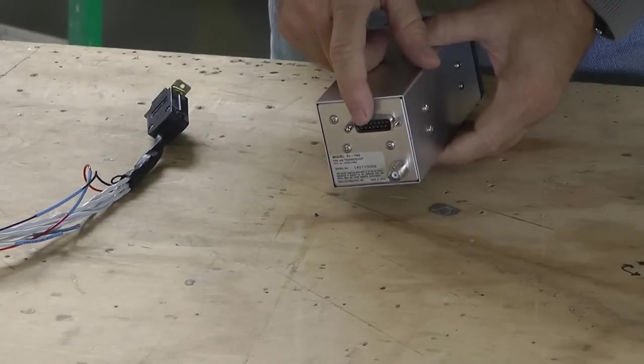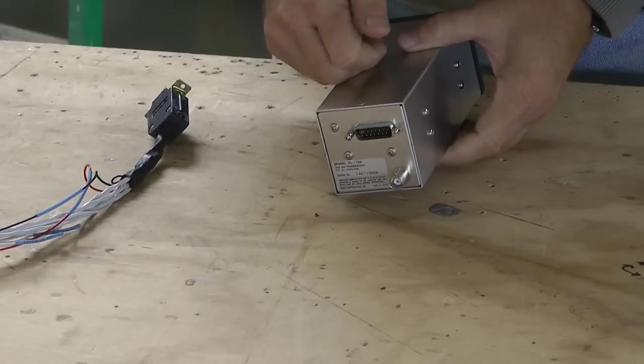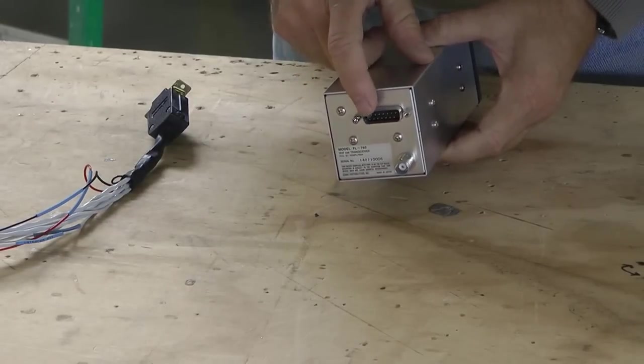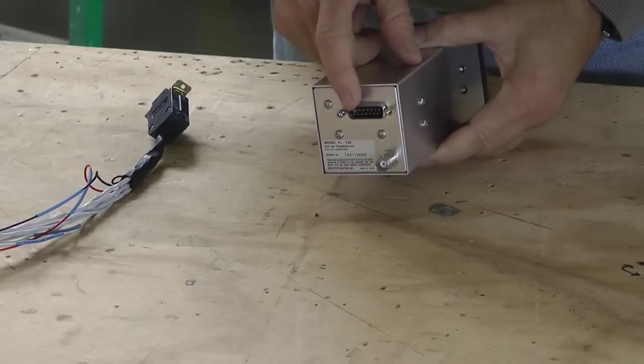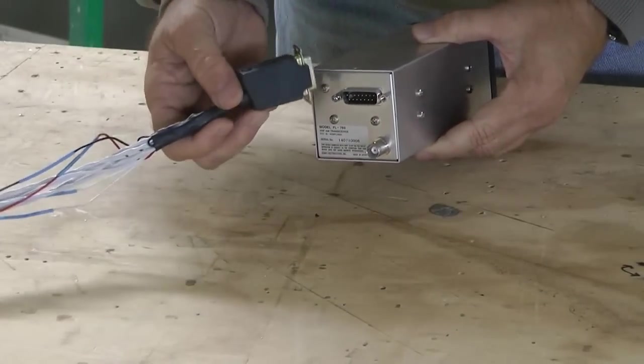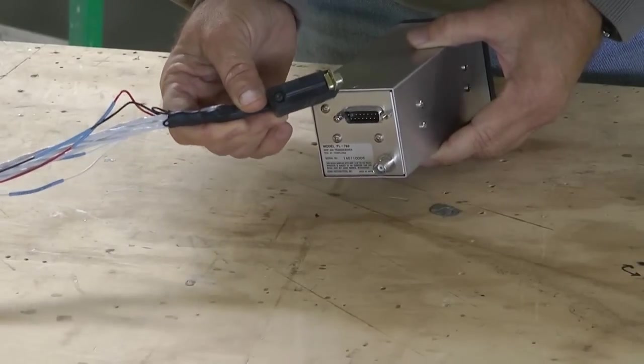And then we need a push-to-talk line so that when we hit the stick button we transmit. And we might also want some audio to play or music, so we need another jack for that. So how do we wire up a plug with all of those connections?